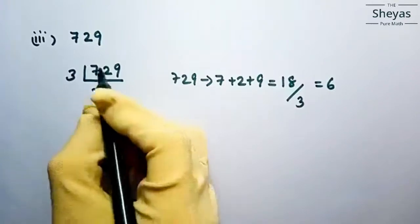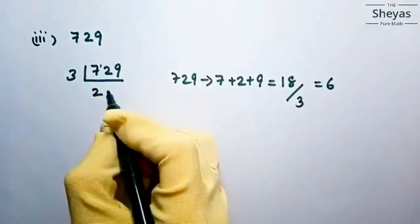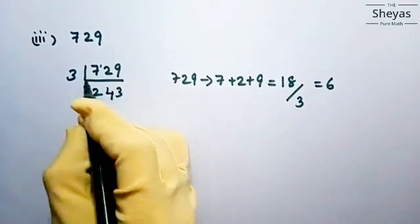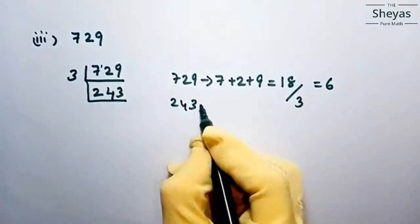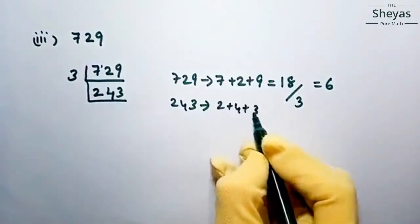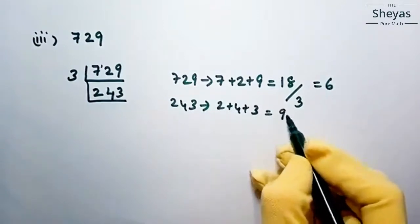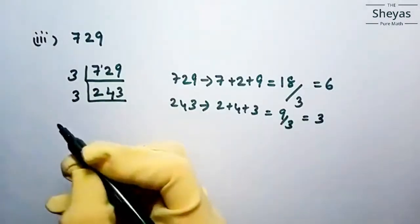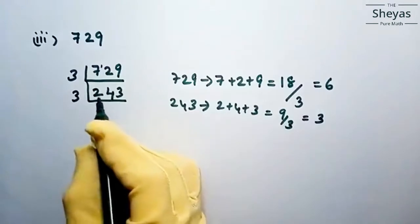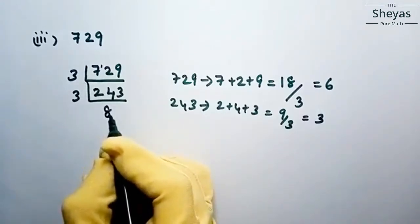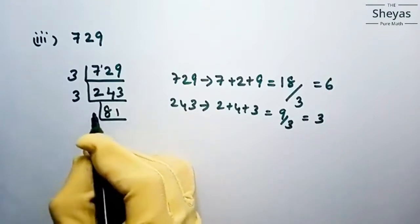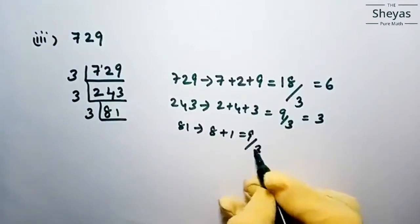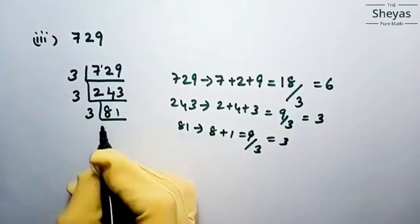Again check 243 for divisibility by 3: 2 plus 4 plus 3 equals 9, which is divisible by 3. So write down 3. Dividing 243 by 3 gives 81. Again 81: 8 plus 1 equals 9, divisible by 3. So write down 3. Dividing 81 by 3 gives 27.